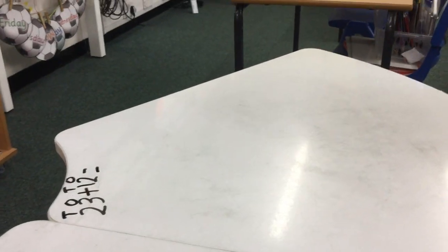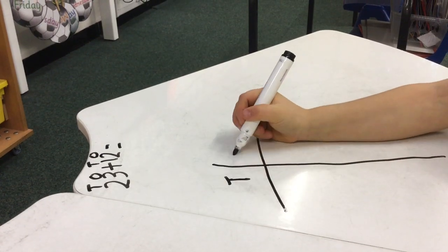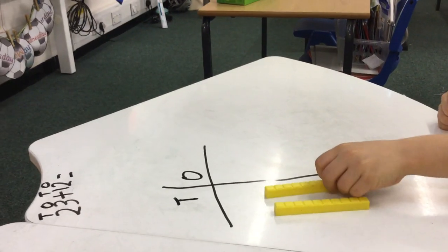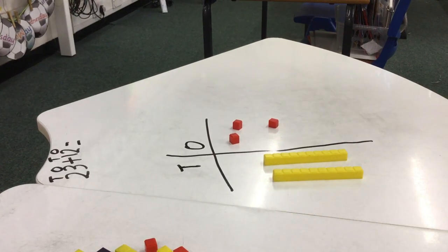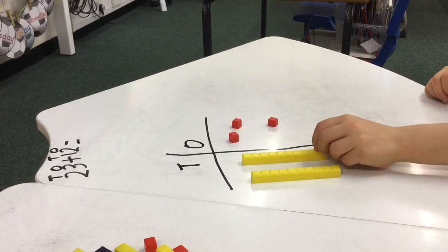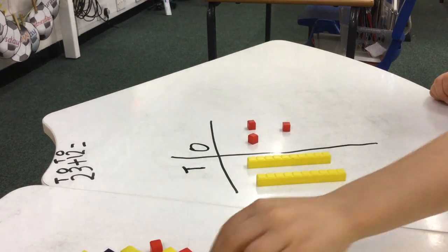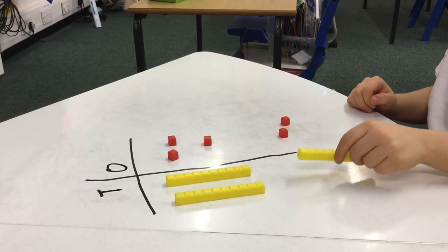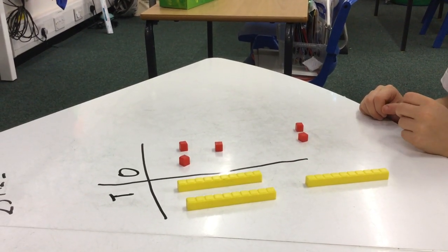Okay, the first way that we're going to show how we can add these up is by using our deems. Could you try that for me? Can you count those for me? 10, 20, 1, 2, 3. Good. And then what are you going to put next? The 12. And can you count those for me? 10, 11, 12. Good girl. And now what are you going to do? I'm going to put them together. Off you go then.